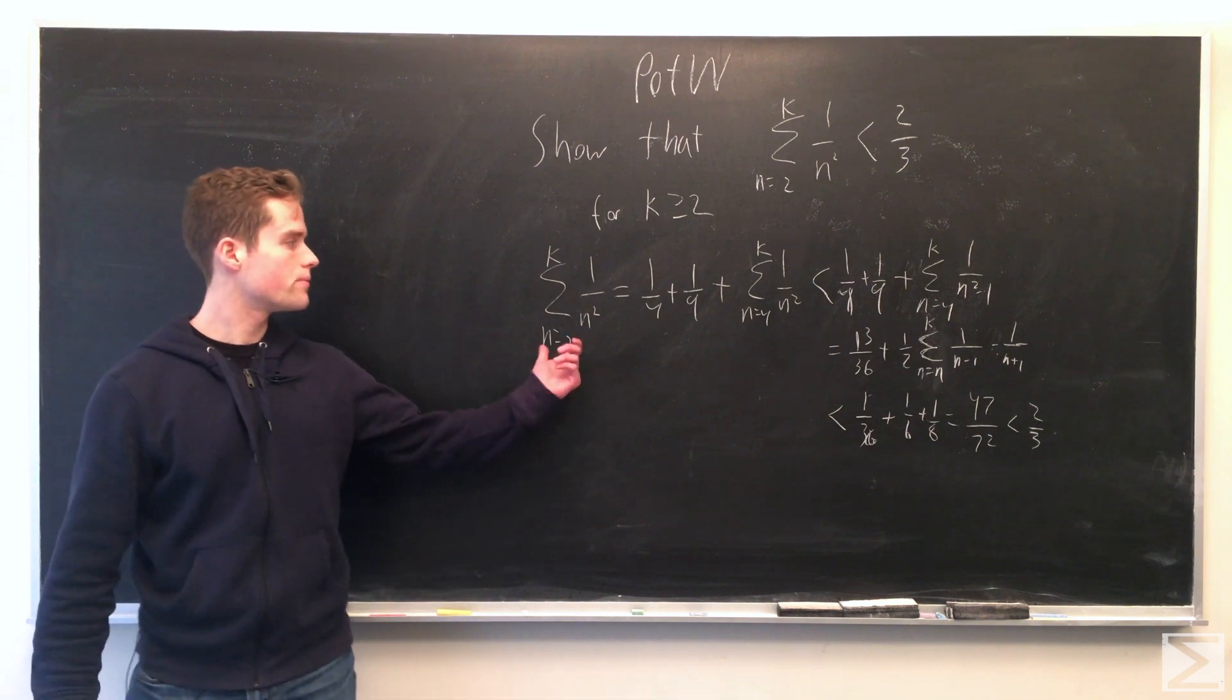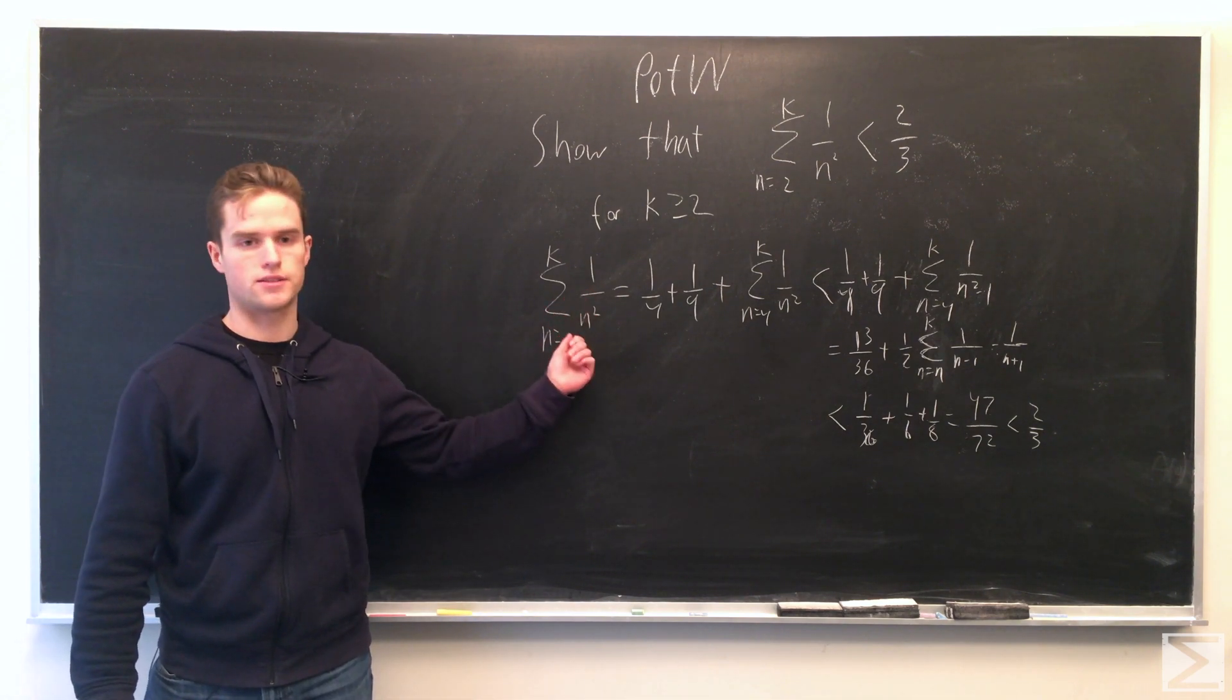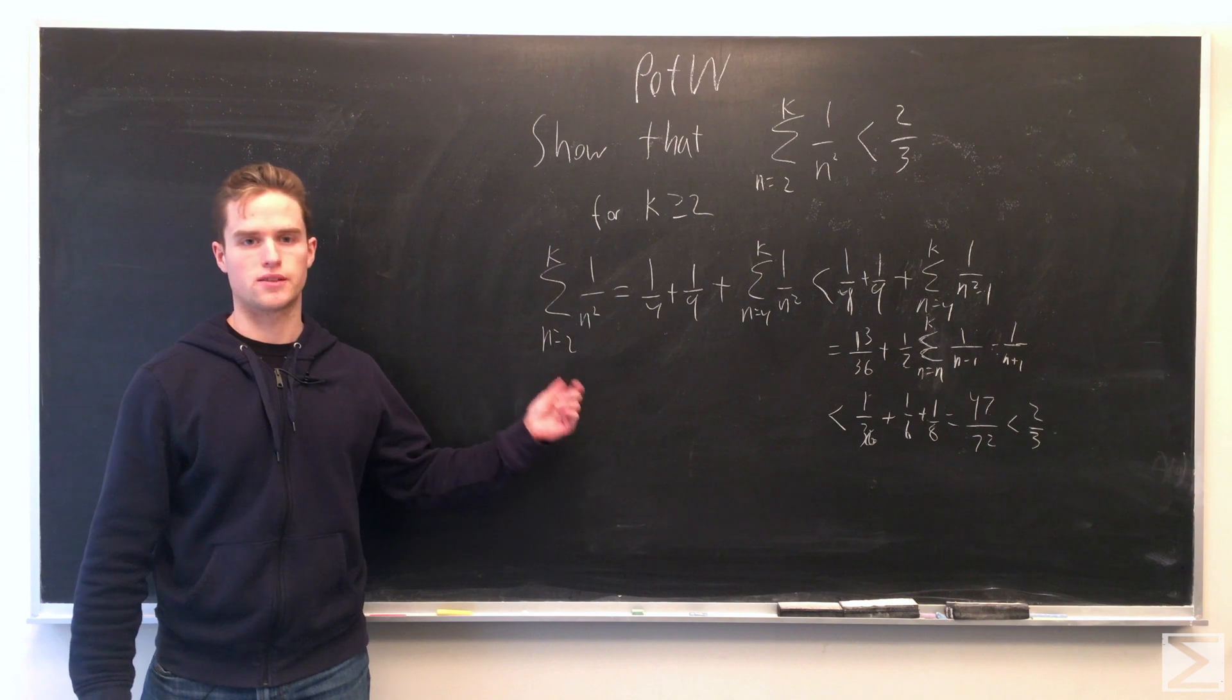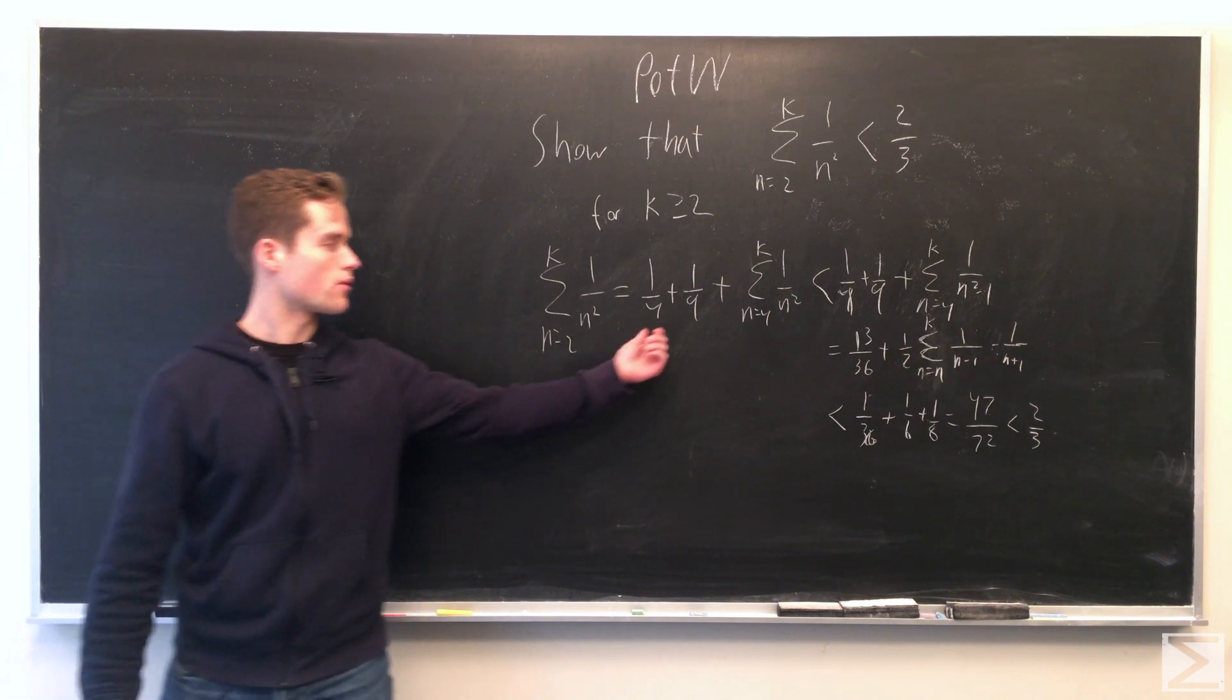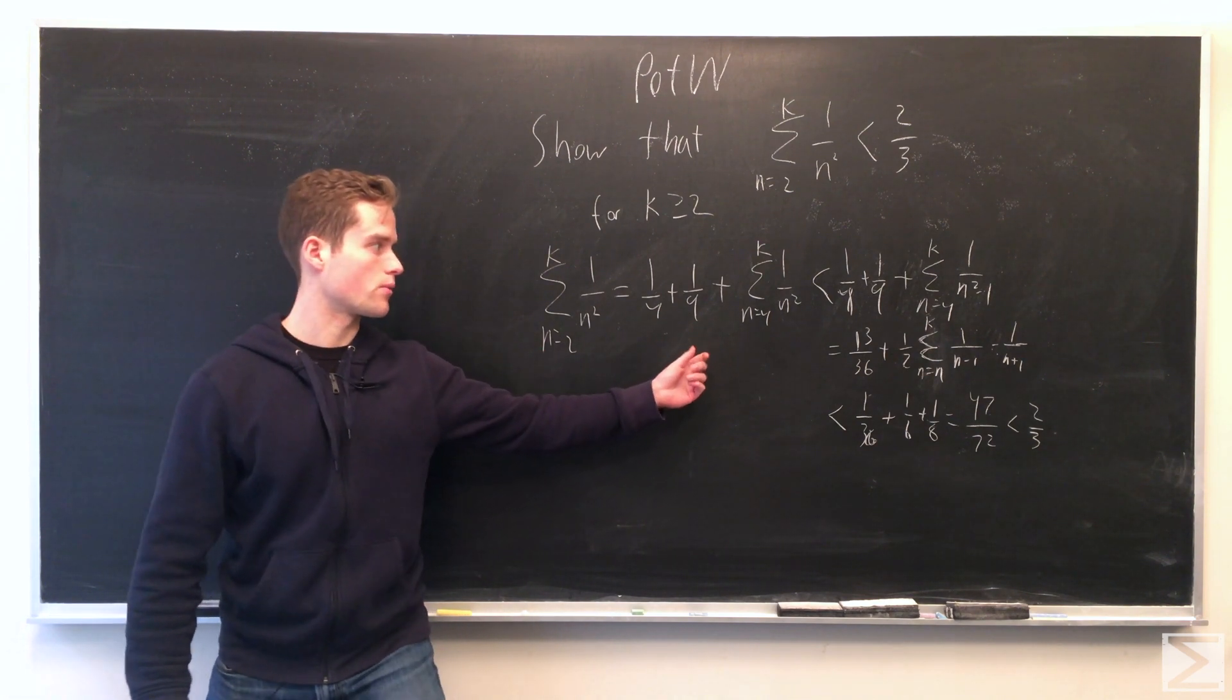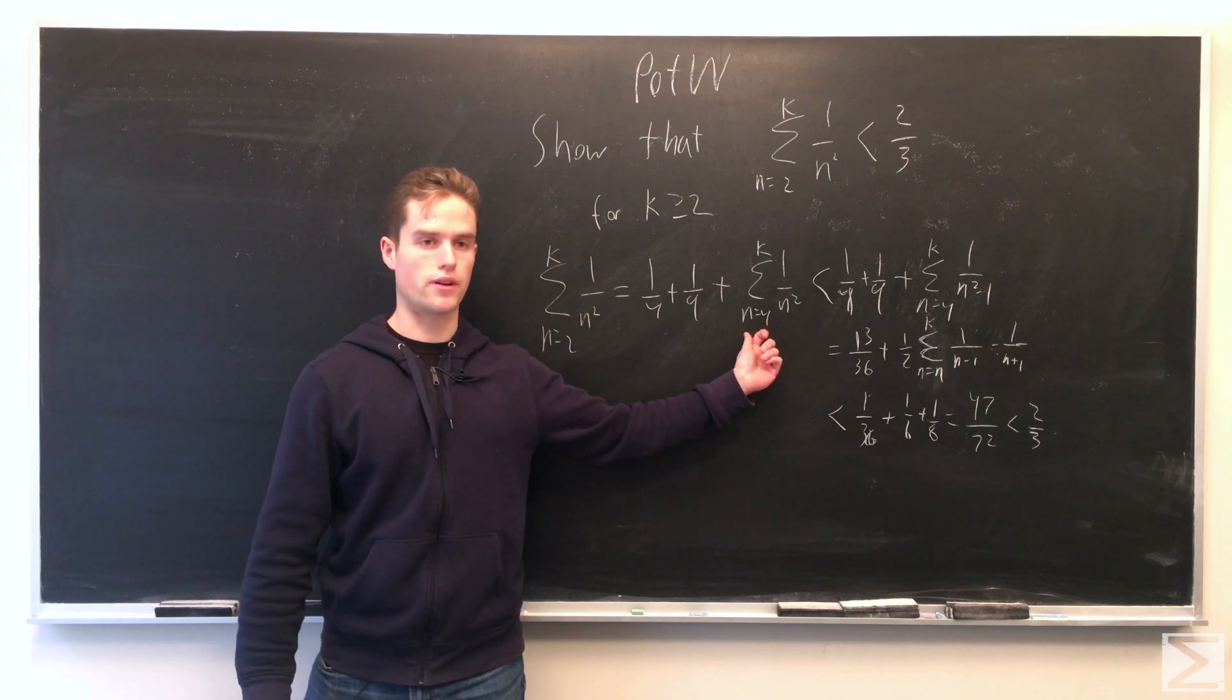So our sum from n equals 2 to k, 1 over n squared, so 1/4 plus 1/9 plus 1/16, et cetera. We're going to pull out the 1/4 and 1/9, and we're going to sum from n equals 4 now to k.